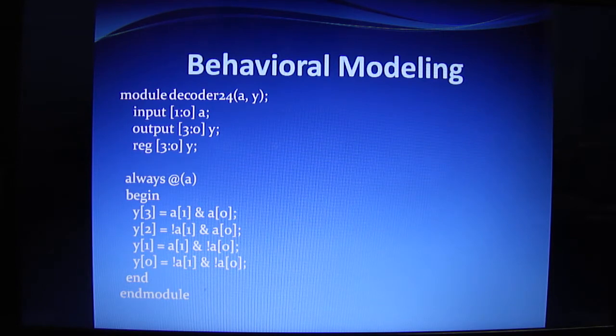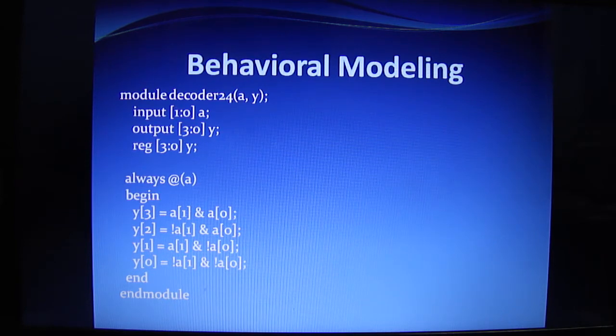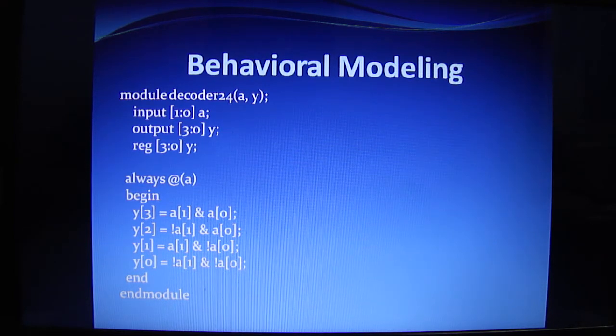Here we are writing a program for a 2-4 decoder, so we require two inputs and four outputs. We are defining the input a as [1:0].